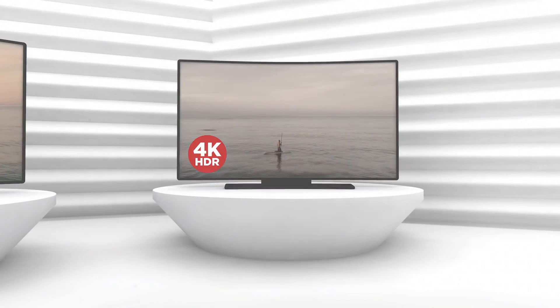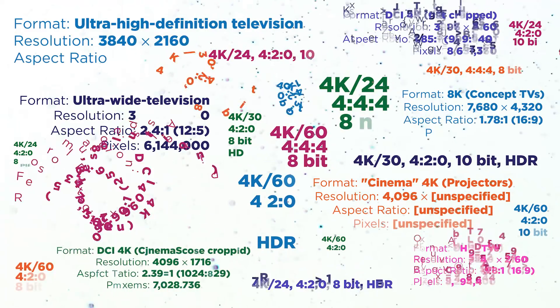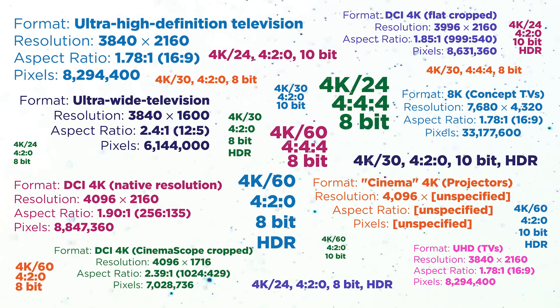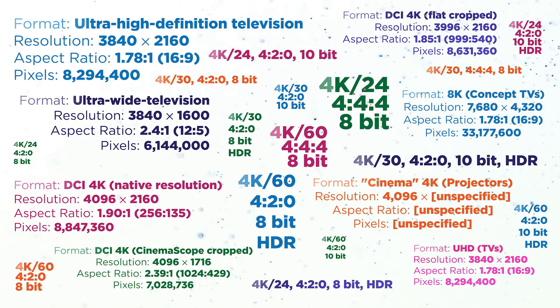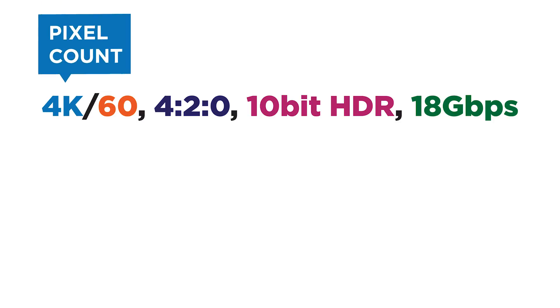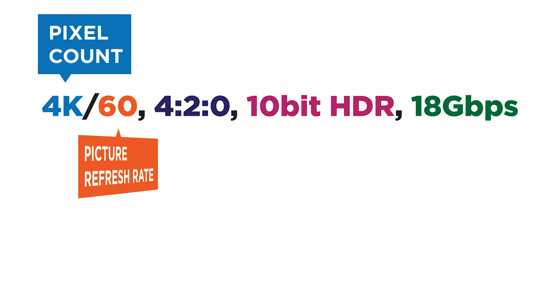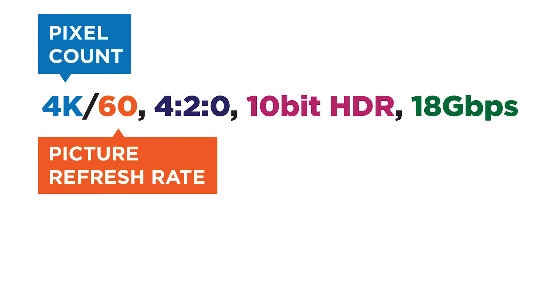Why is that? The term 4K actually refers to a specification that determines how good the picture quality will be, which isn't one standard number, but a range. Here's an example of the best 4K spec. It has a 4K pixel count, but that isn't everything that goes into making a display 4K. A higher picture refresh rate means there will be a smoother transition between frames.